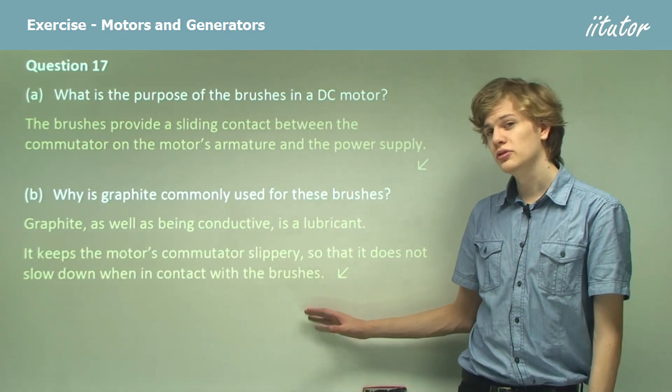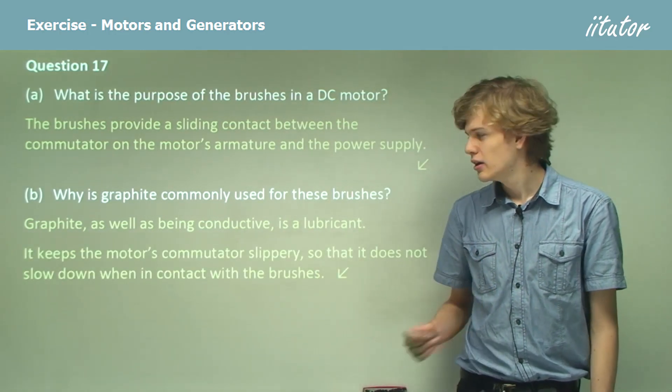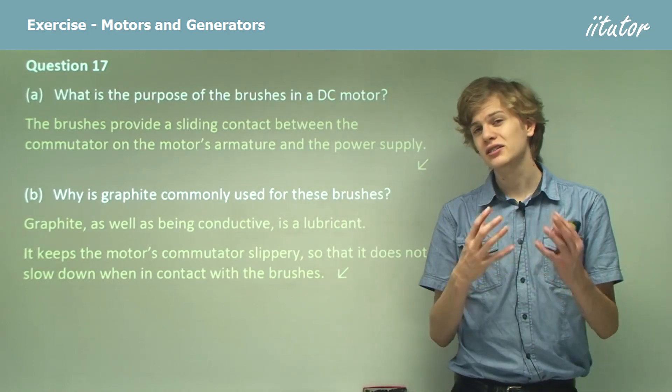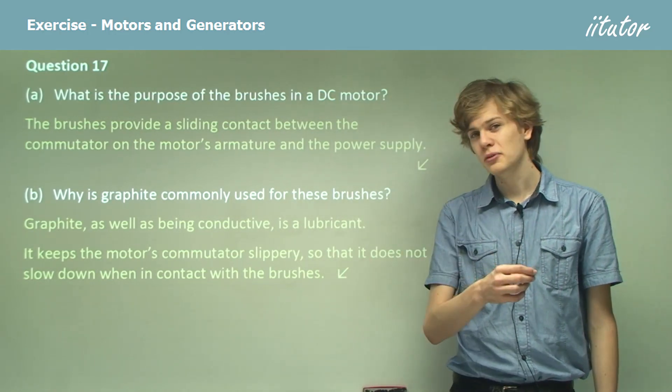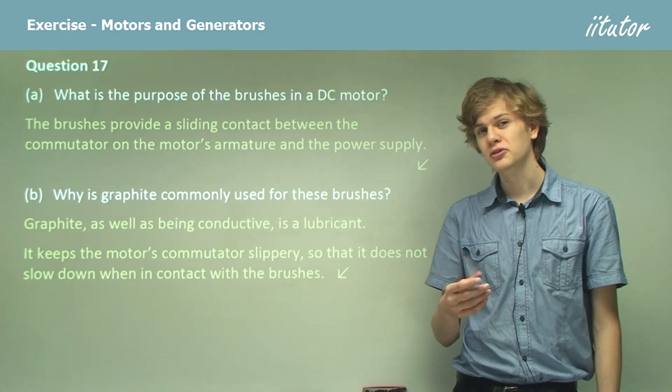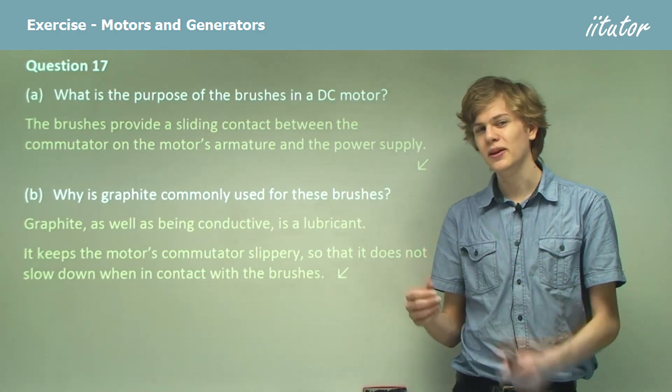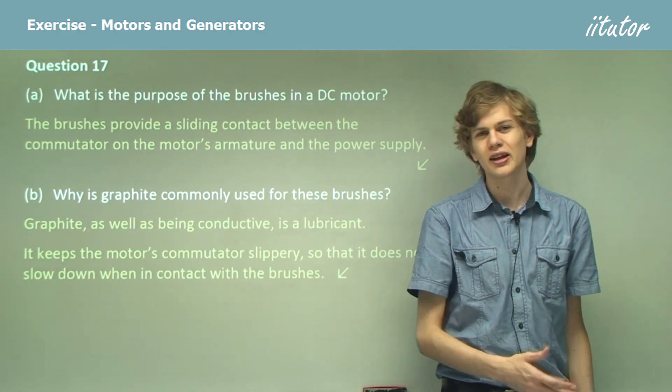So graphite keeps the motor's commutator slippery. That's what a lubricant does, it keeps things slippery. In fact, if you use a lead pencil on paper, the graphite is slippery enough to slip right off the pencil and make a mark on the page. That's how it writes.